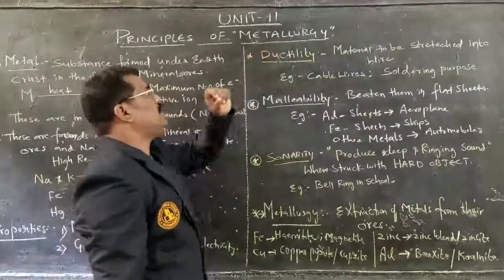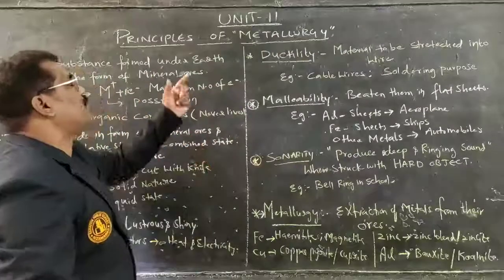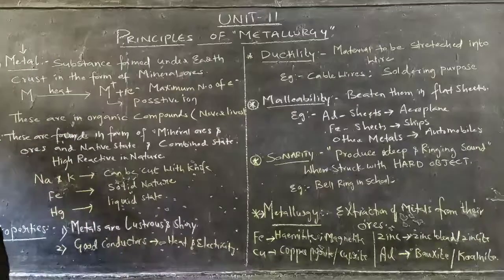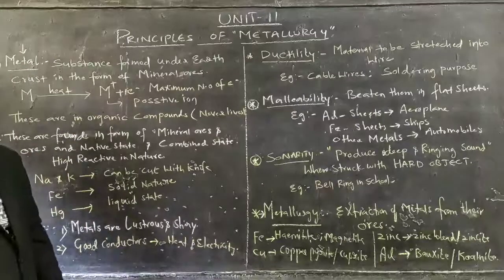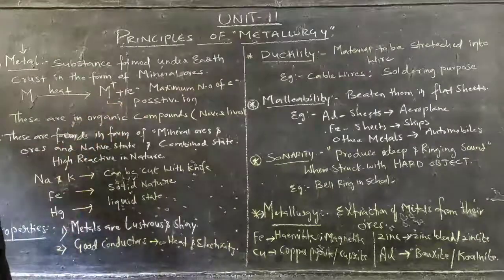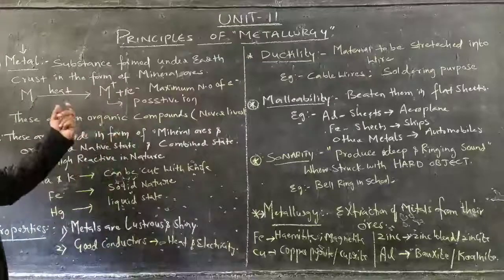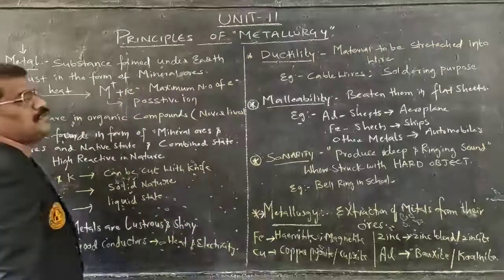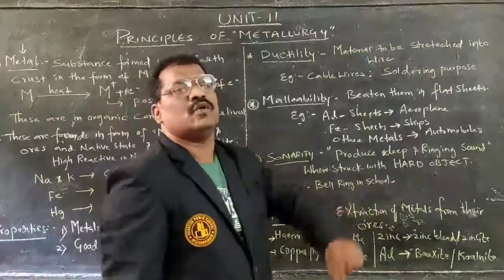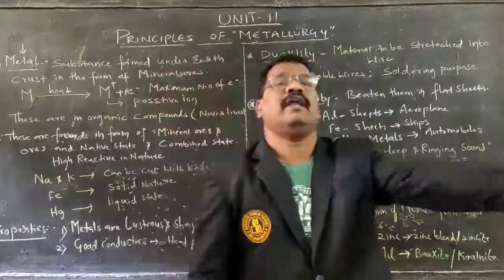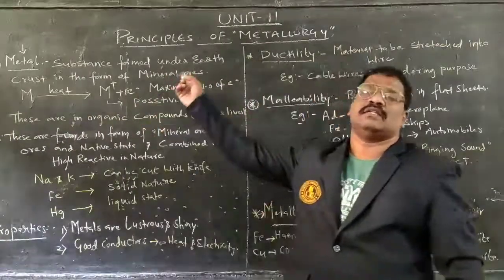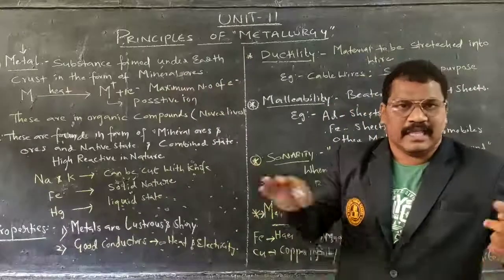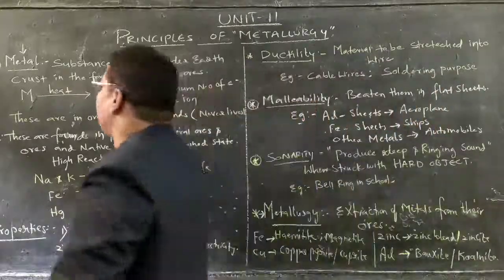Before going into the topic of metallurgy, what is a metal? A metal is a substance which can be found under the earth's crust in the form of mineral ores, ores, or in native state. These metals by default consist of a maximum number of electrons, and free flow of electrons takes place within them.